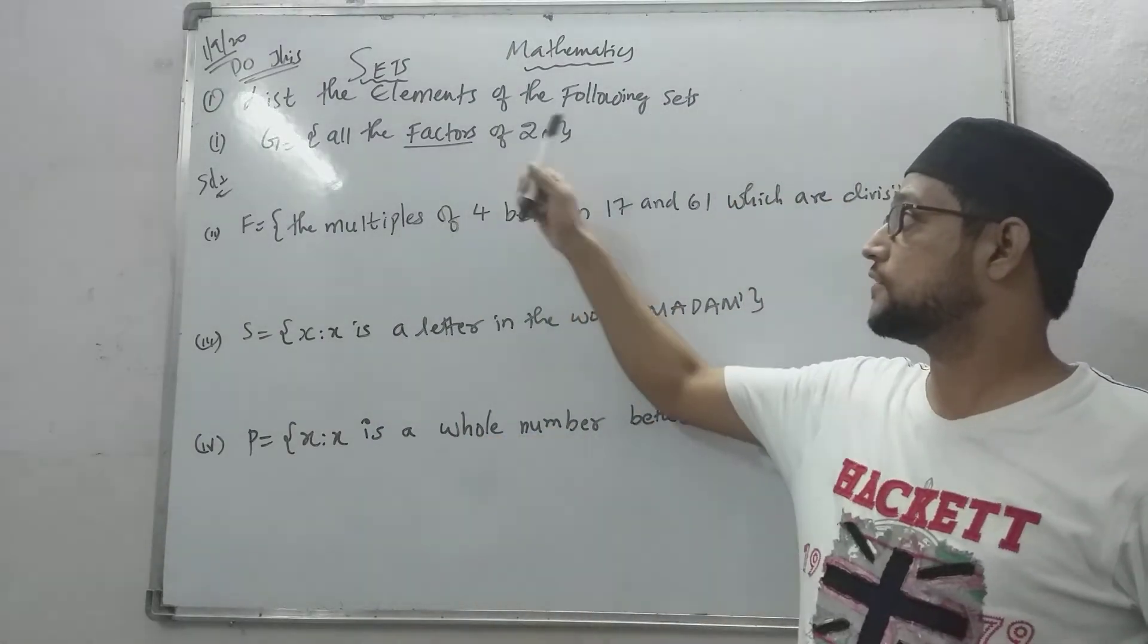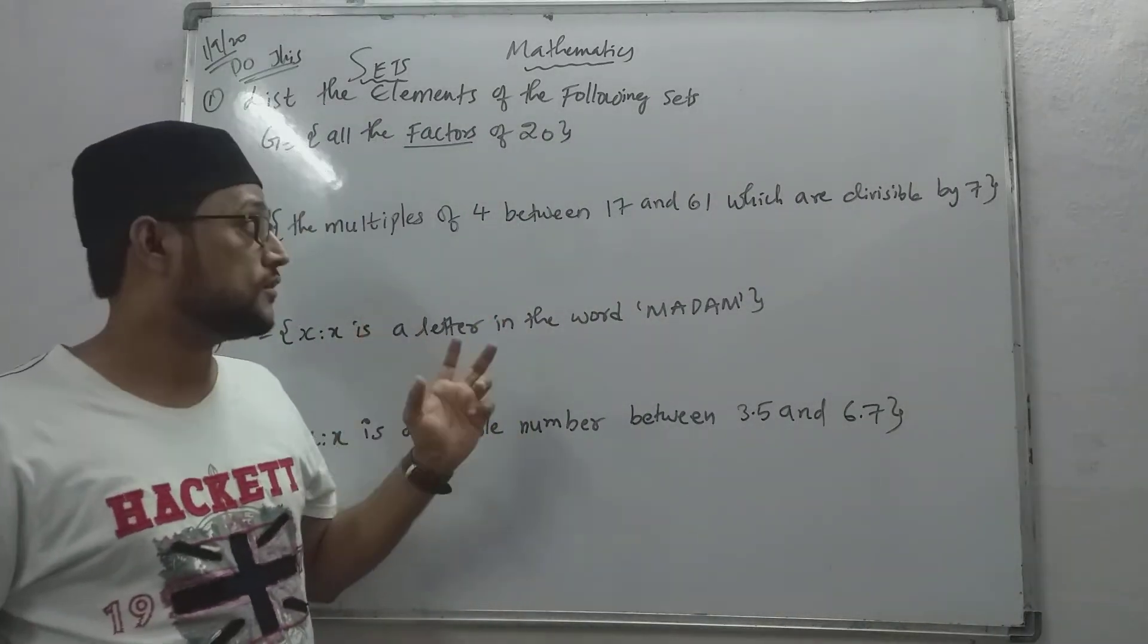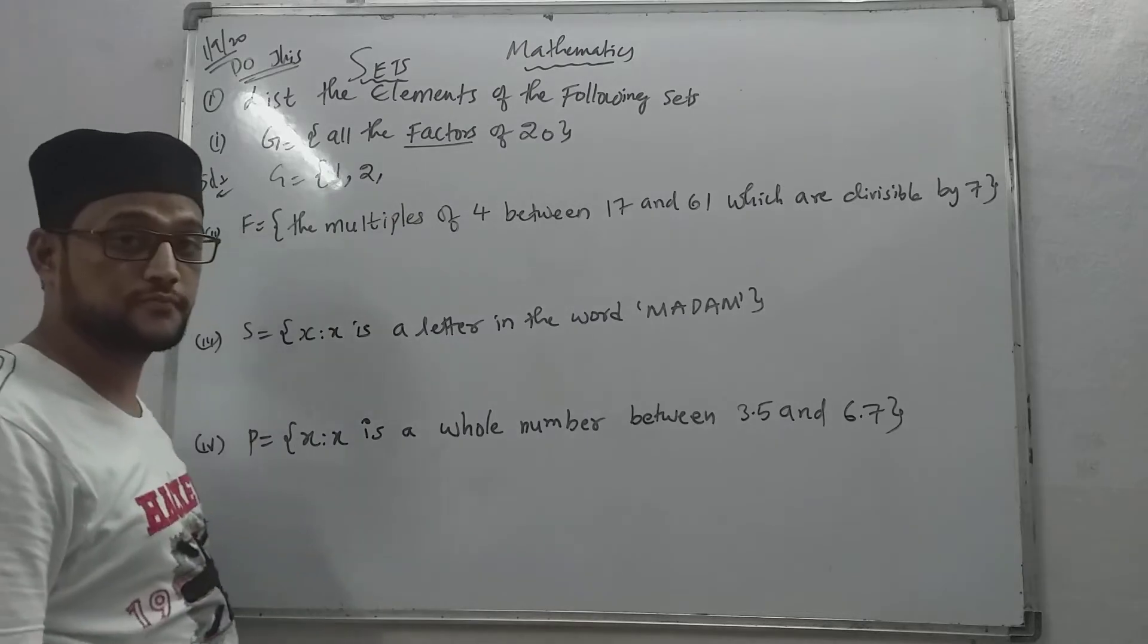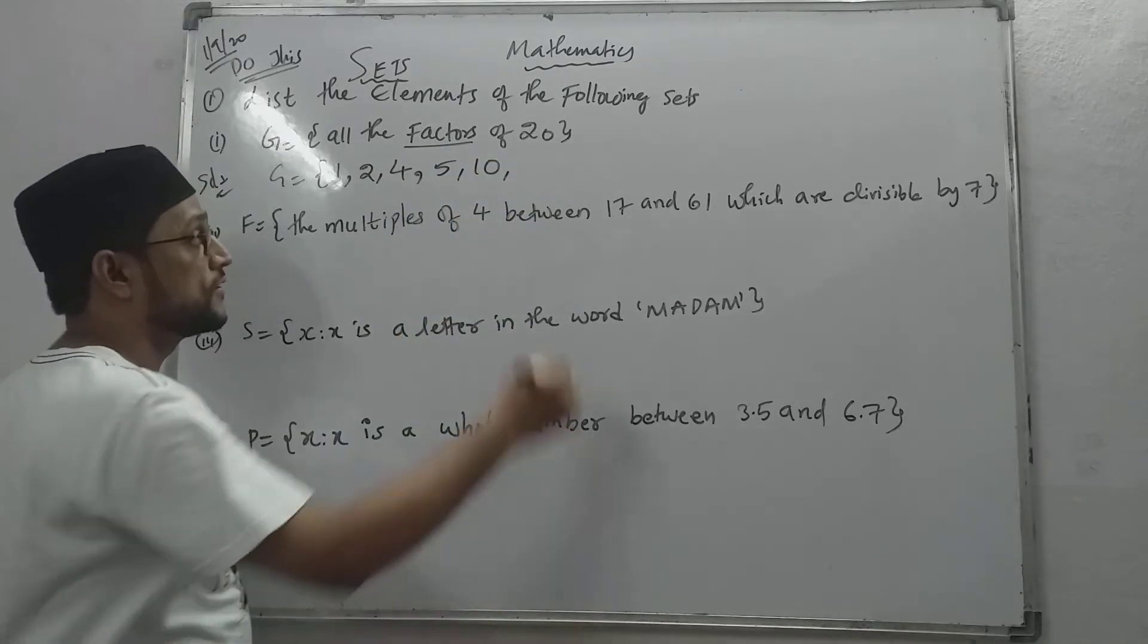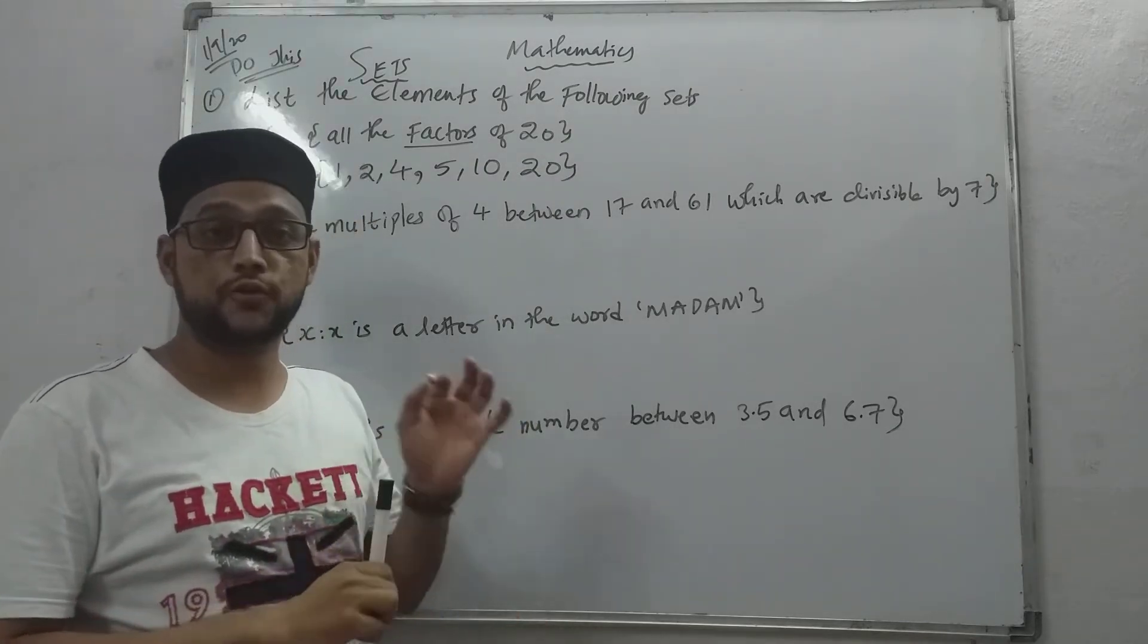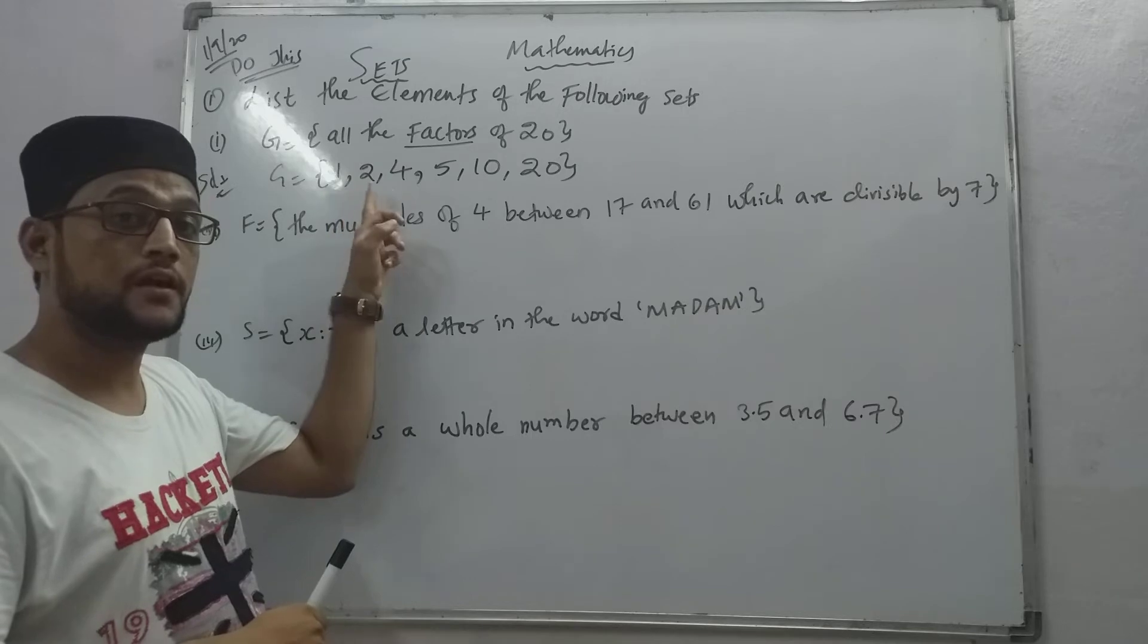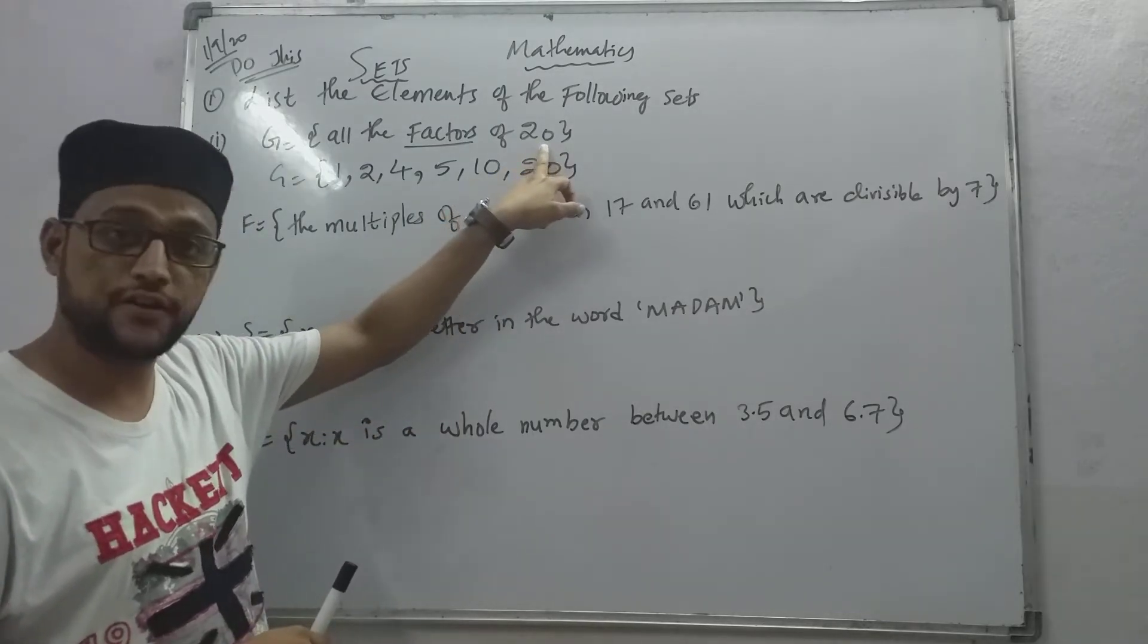What is the meaning of factor? Factor is nothing but - here 20 is there. So that means you have to think in which tables 20 can come. Like in one, in one table, in two also, in four also, five, ten, and twenty. So remember that factor is nothing but which tables the number can go into. One, two, four, five, ten, twenty. That means all these numbers are factors of twenty.